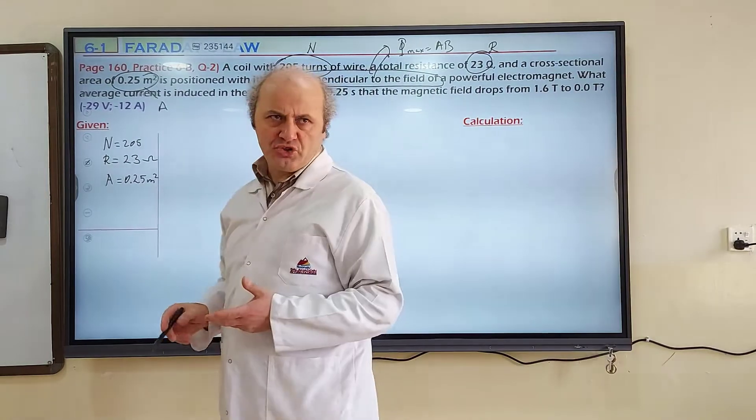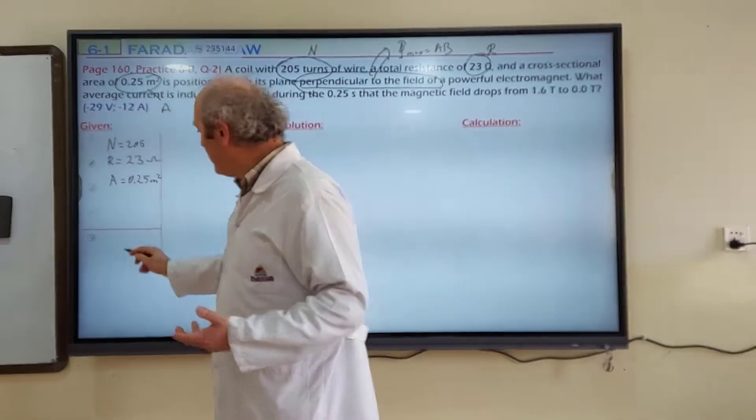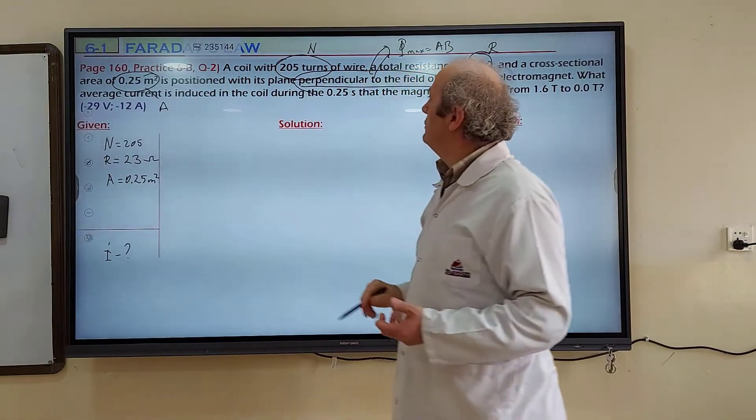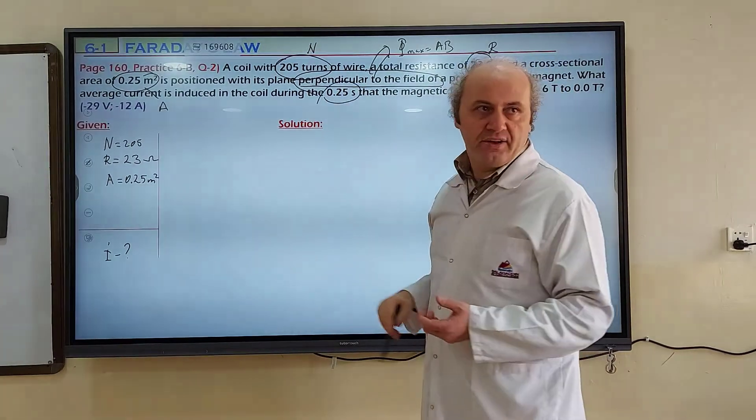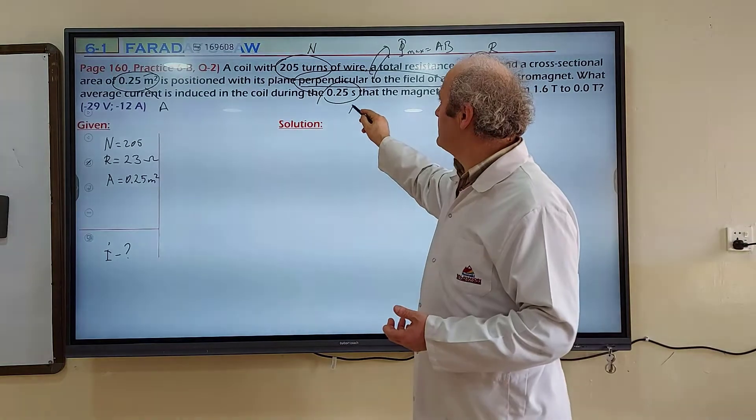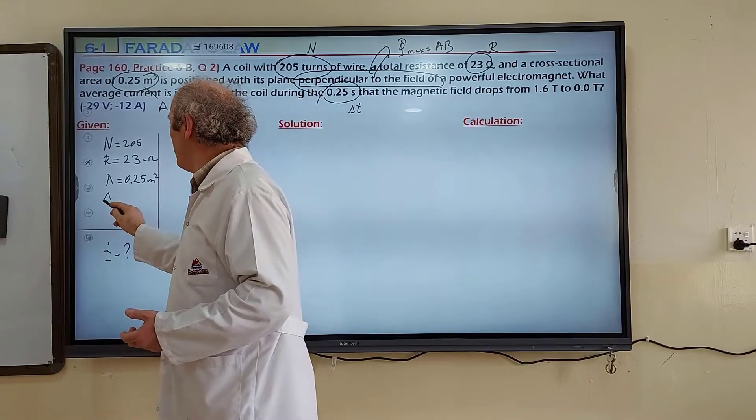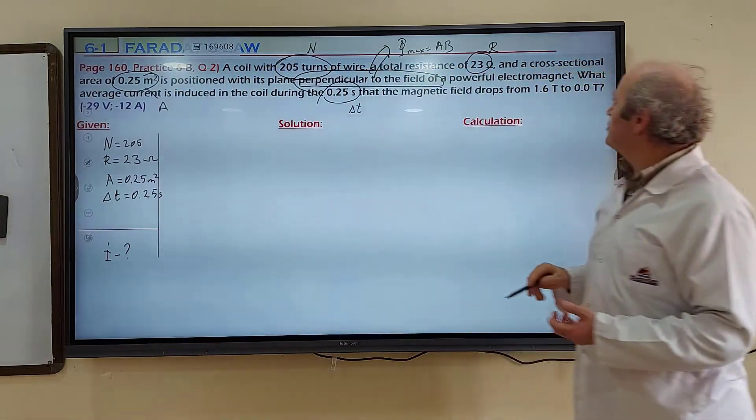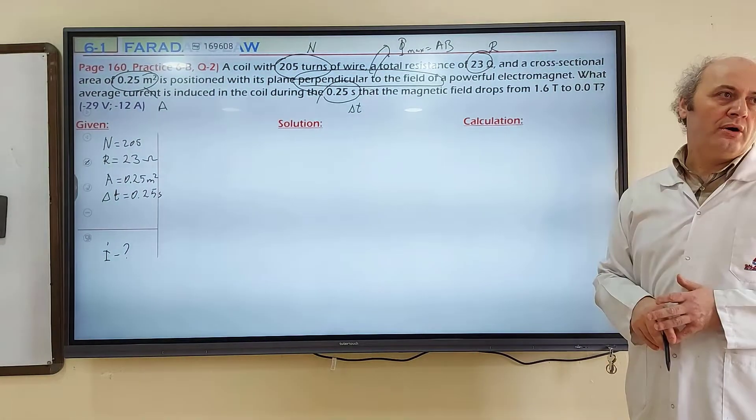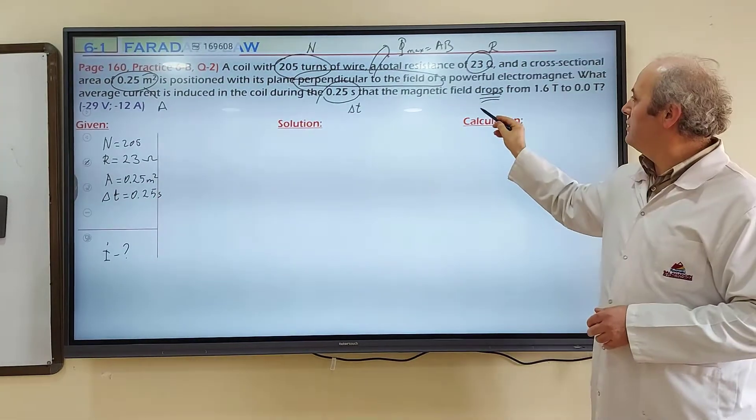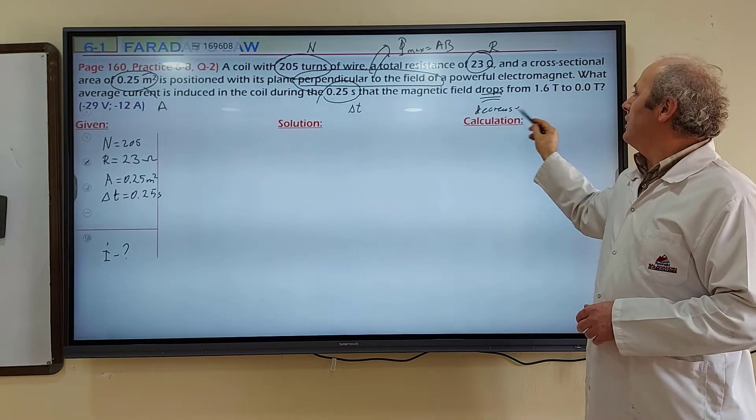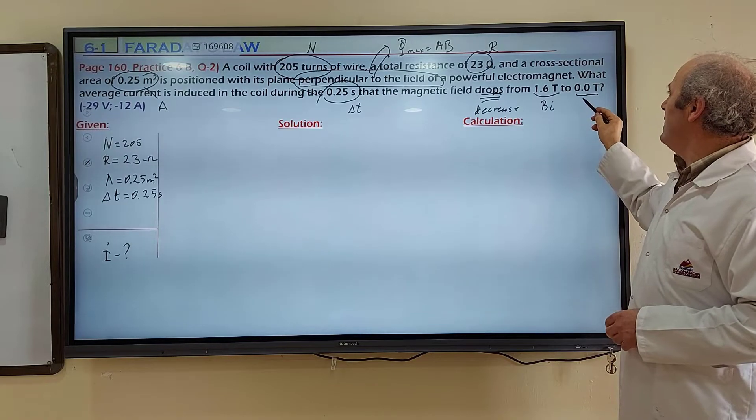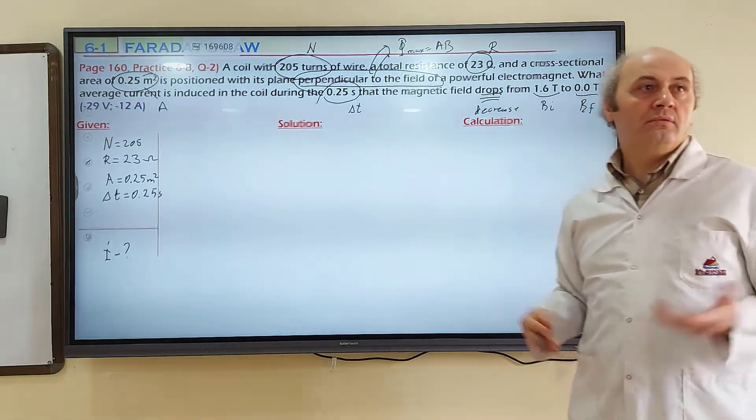Perpendicular to the field of the powerful electromagnet. What is the average current? Current is the question. Average induced current in the coil during 0.25 seconds. 0.25 seconds is delta t. Delta t equals 0.25 seconds. The magnetic field drops from 1.6 Tesla to 0. Drops means decrease. It decreases from 1.6 Tesla, this is initial magnetic field, to 0 Tesla, final magnetic field.